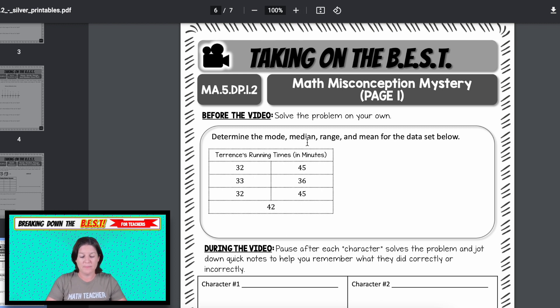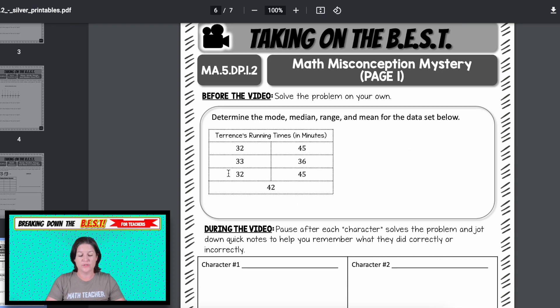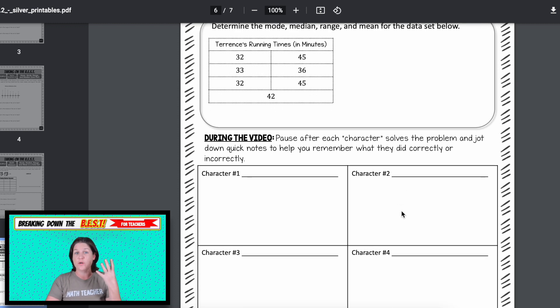It says, determine the mode, median, range, and mean for the set of data below. So here's our data. You have to determine all of it. Well, they do. Once they have their answer, they click play, and they will watch as four other characters solve that same problem. Three of the characters are going to make a mistake that students commonly make, and only one character will solve the problem correctly. So students will need to watch closely, analyze, justify, decide who is correct and why, and then they'll fill out their detective report.